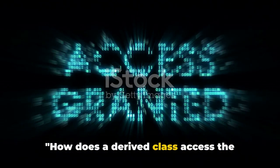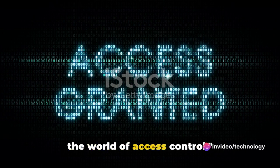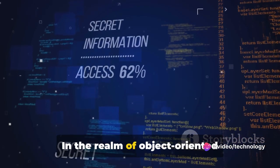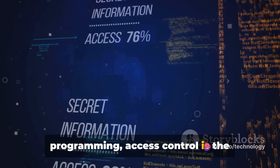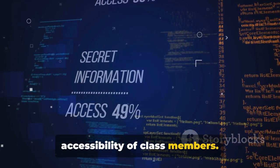How does a derived class access the members of a base class? Let's dive into the world of access control. In the realm of object-oriented programming, access control is the mechanism that governs the visibility and accessibility of class members.